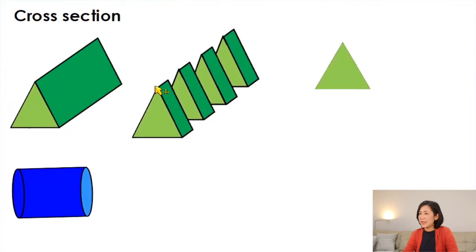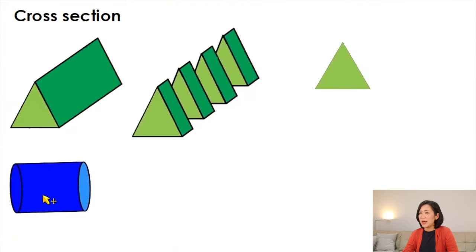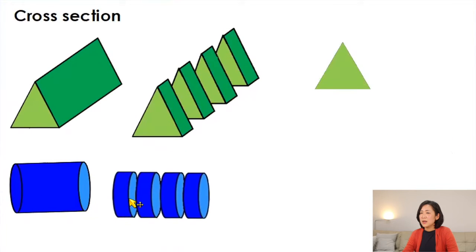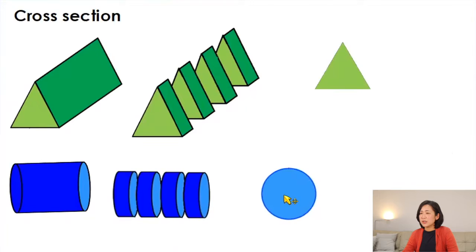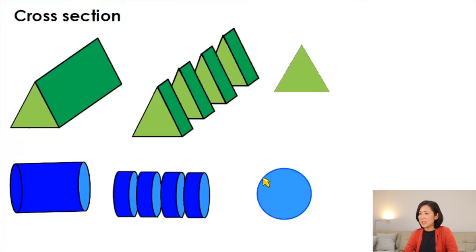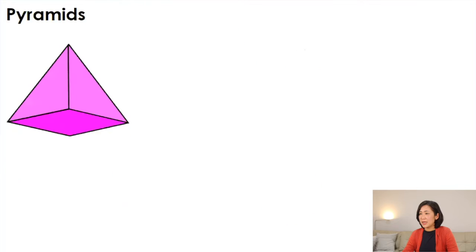A prism also has a cross-section. If you slice a prism perpendicularly, you can see the sides — this is called the cross-section, and the cross-section is always the same and identical to its base. For example, if you slice a cylinder perpendicularly, the cross-section is a circle, which is also the base of the cylinder.